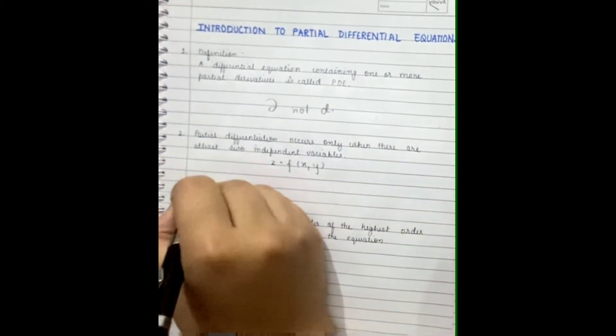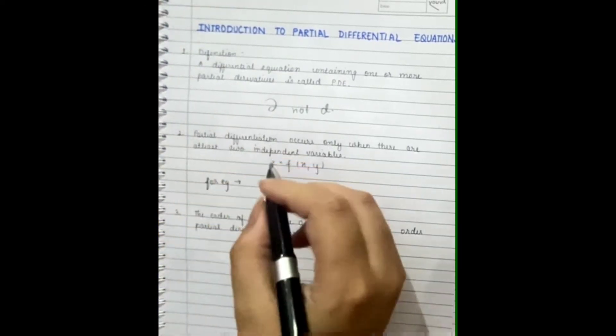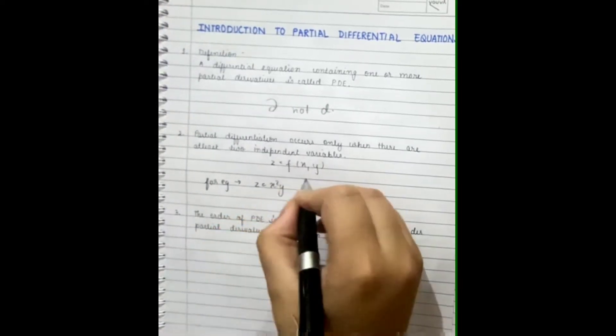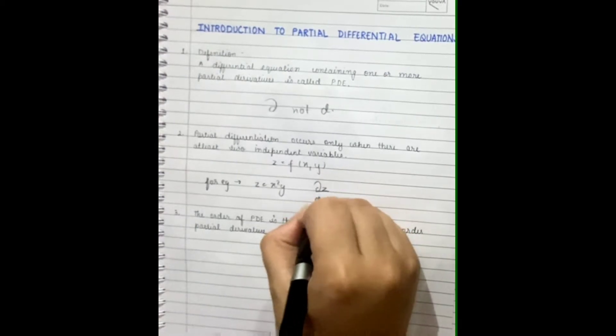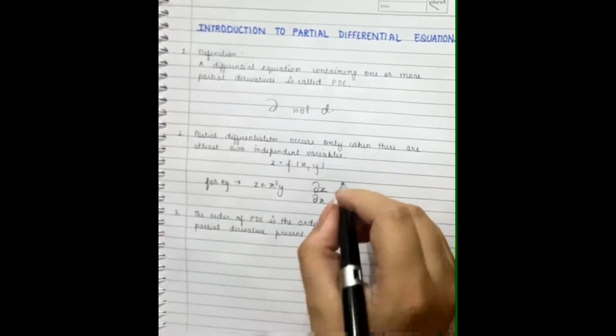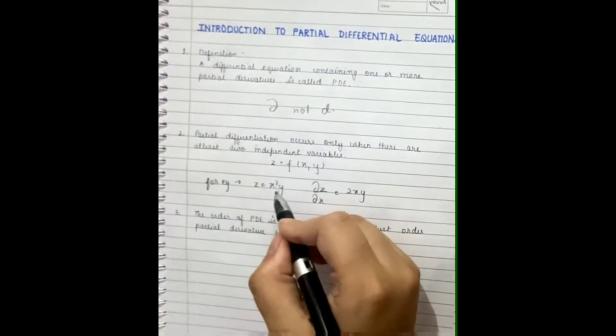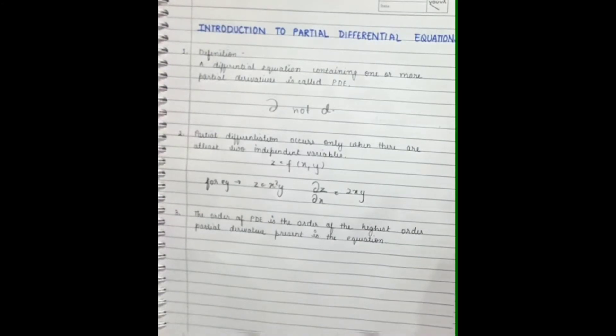To get into this, let's look at another example. If the value of Z is equal to X squared Y, and we partially differentiate Z with respect to X, the value which we'll get is 2XY. Here Y is treated as a constant and X is differentiated.